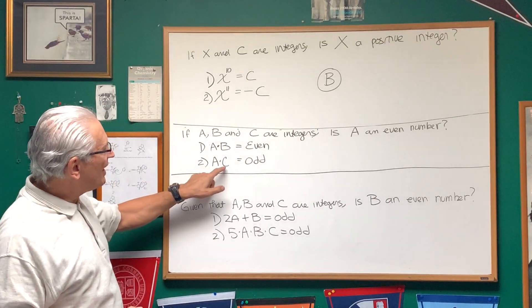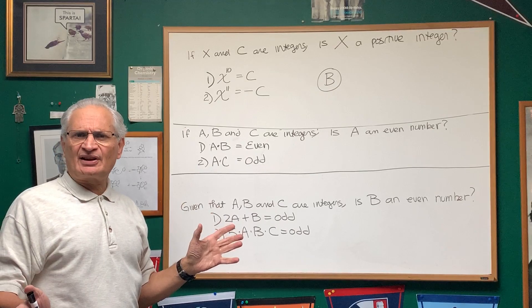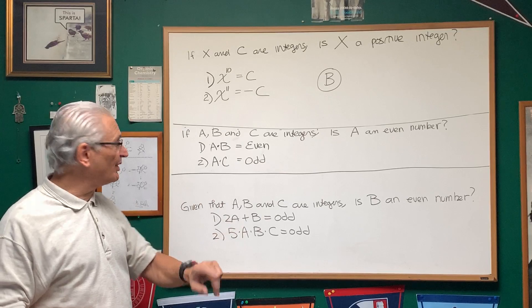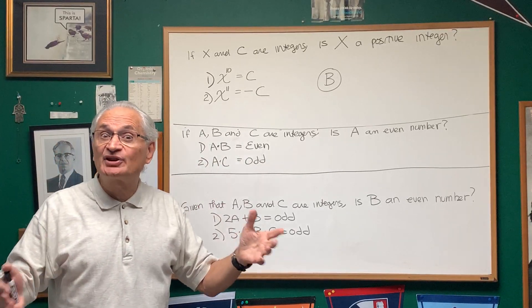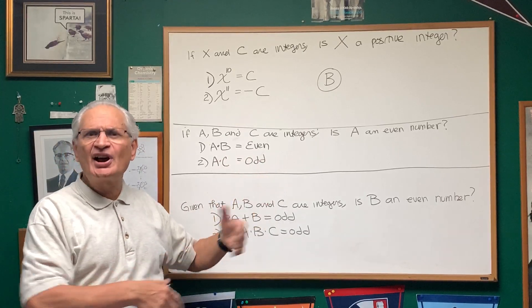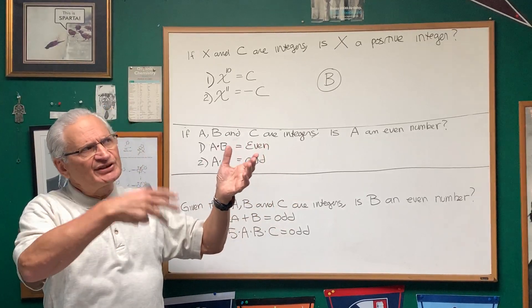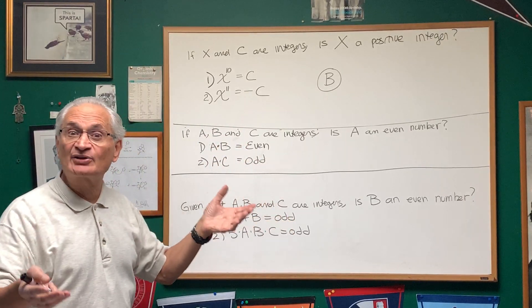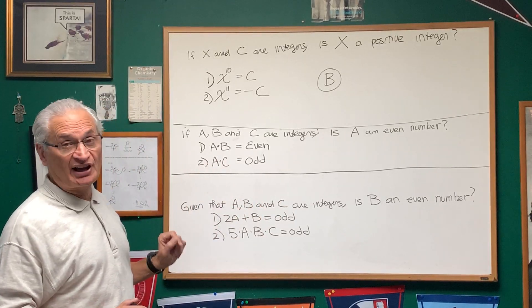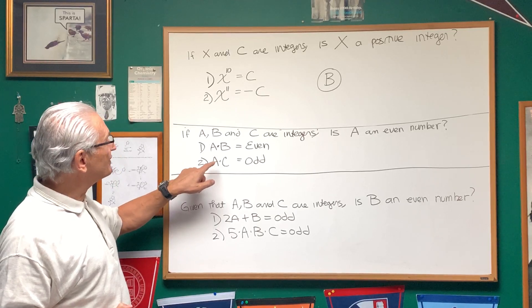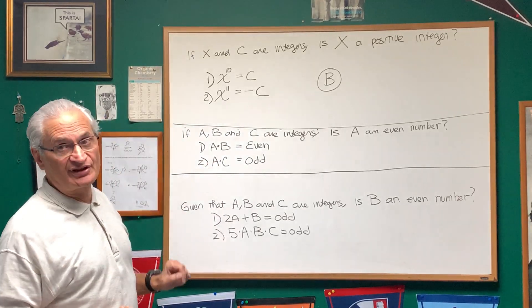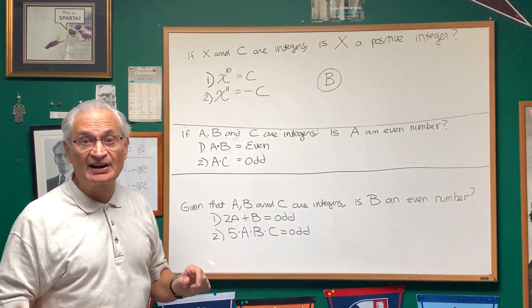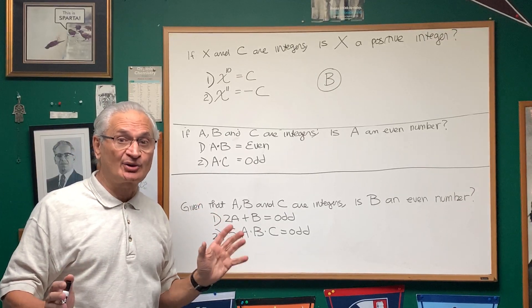Let's look at statement two. A times C is odd. Now, think about pairs of integers. What pairs of integers multiply out to an odd number? A and C, when you think about it, both have to be odd. And there are formal ways of showing this, but this is a time test, so just three times five is 15, seven times nine is 63. Two odd numbers multiply out to an odd number. Neither of these can be even. So we know from statement two that A is not an even number. A must be an odd number. So therefore, statement two alone, the answer here is again, B. Statement two alone is sufficient to answer the question.